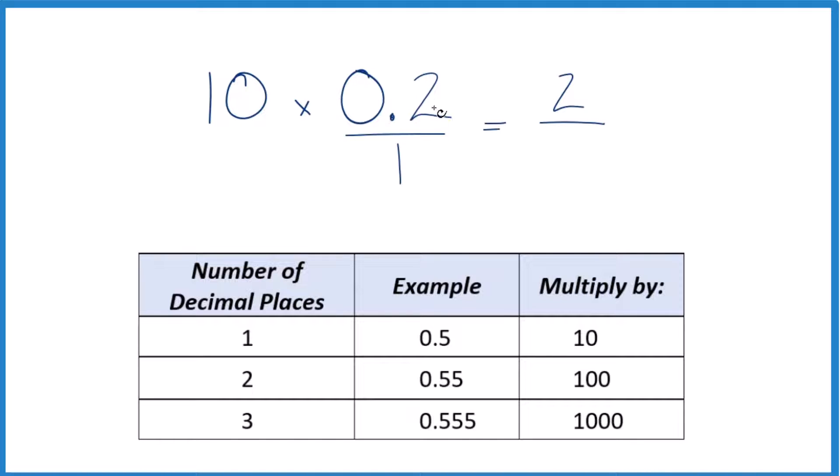But we can't just multiply the numerator by 10. We also need to multiply the denominator by 10. That's because 10 divided by 10, that's just 1. So we're multiplying by 1. It doesn't change the value, just the way we write it.